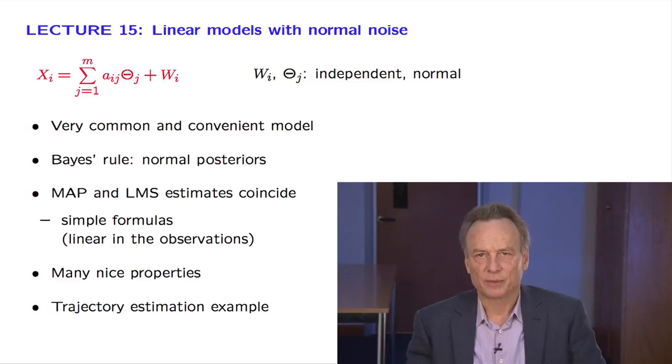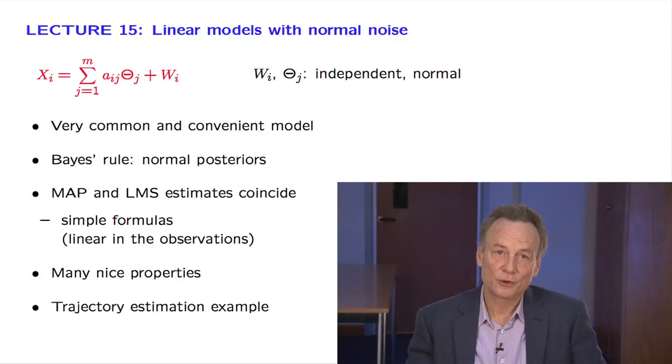For example, it turns out that the posterior distribution of each theta j is itself normal, and that the MAP and LMS estimates coincide. This is because the peak of a normal occurs at the mean.